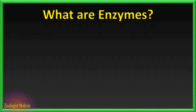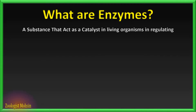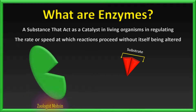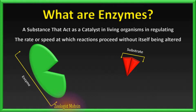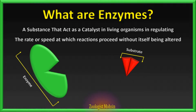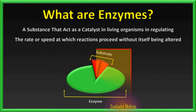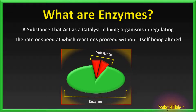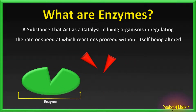What are enzymes? According to Britannica, a substance that acts as a catalyst in living organisms, regulating the rate at which chemical reactions proceed without itself being altered in the process, is called an enzyme. They are actually biocatalysts. Substrates are those substances on which enzymes act and convert them into products. When an enzyme attaches with the substrate and starts working, this combination is called enzyme-substrate complex. The new substances formed after enzymatic activity are called products.